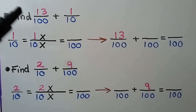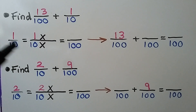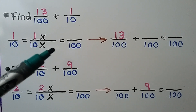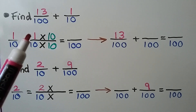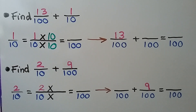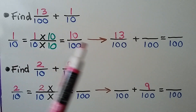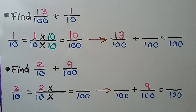We need to find 13 hundredths plus 1 tenth. We need to give the 1 tenth a denominator of 100. We can multiply both the numerator and denominator by 10. Now we multiply the numerator: 1 times 10 is equal to 10. We know we can add 13 hundredths plus 10 hundredths. We have the same denominator, so we add the numerators: 13 plus 10 is equal to 23.